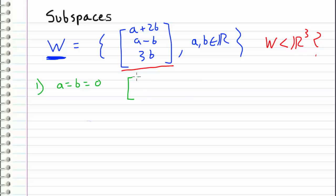what we get is the vector zero plus two times zero, and zero minus zero, and three times zero, which comes out to the zero vector, zero, zero, zero. So we know that W contains the zero vector. So we can say that this vector is an element of W for A and B equal to zero.